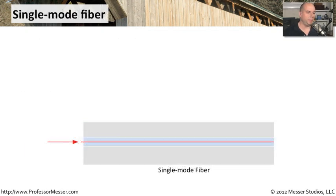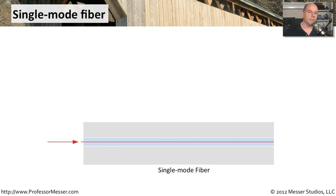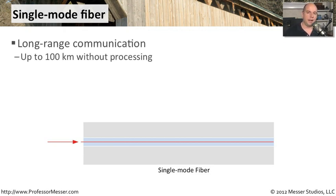Single-mode fiber is very different. The light goes in one side and travels in a direct line all the way down — there's not a lot of bouncing off walls. It is one mode from one side to the other. Single-mode fiber is used for very long range communication — up to 100 kilometers before you would need to stop, regenerate the signal, or process it in some way before sending it down another 100 kilometers.